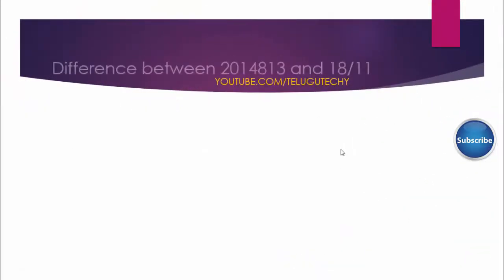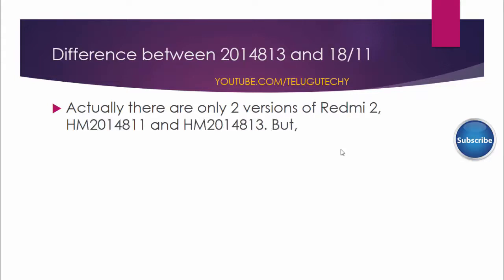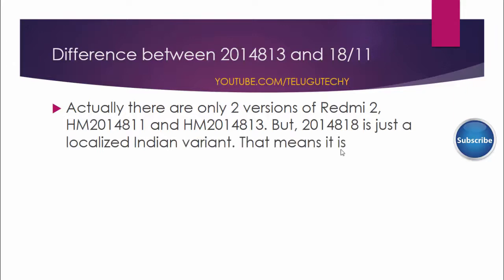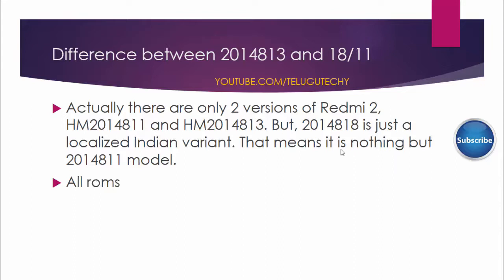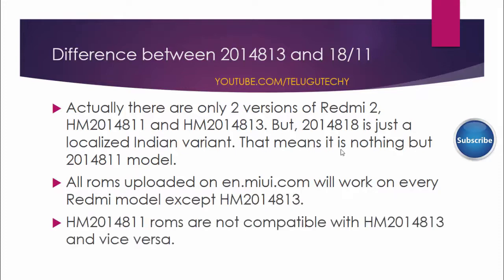The difference between HM2014813 and HM2014811: there are only two versions of Redmi 2 — HM2014811 and HM2014813. HM2014818 is just a localized Indian variant, which means it is nothing but the HM2014811 model. All ROMs uploaded on en.miui.com will work on every Redmi 2 model except HM2014813. HM2014811 ROMs are not compatible with HM2014813 and vice versa.